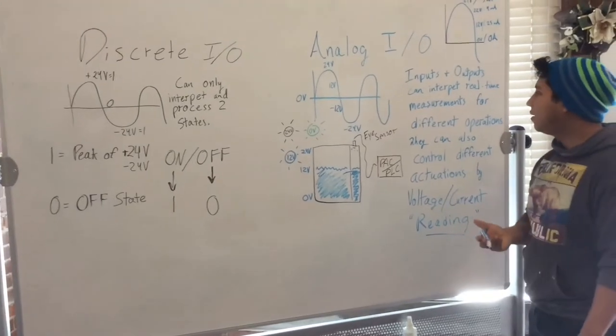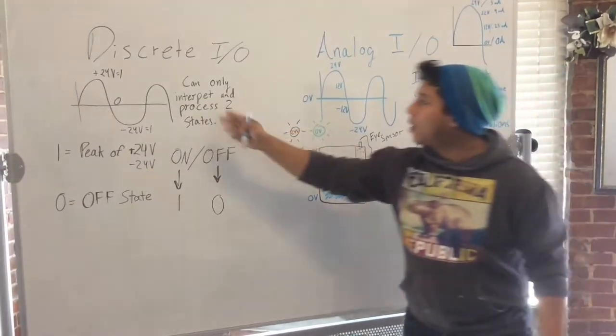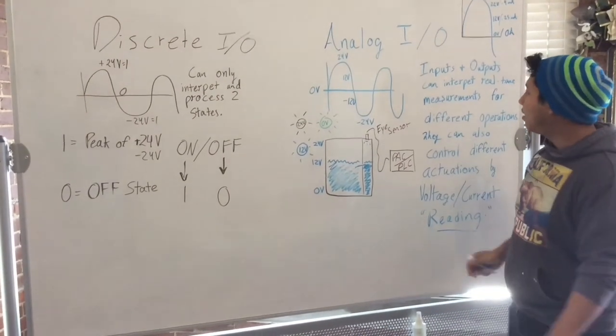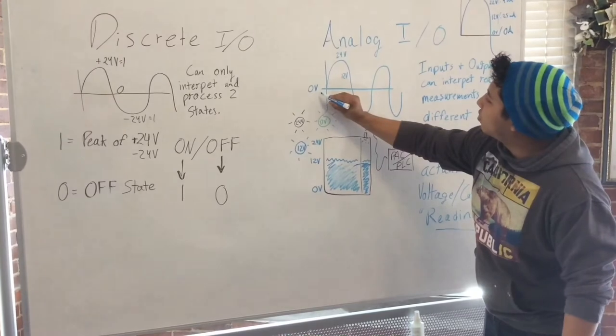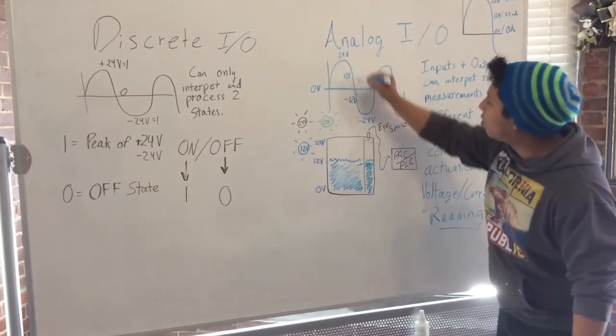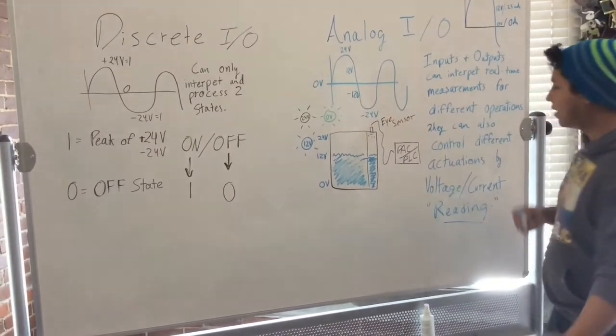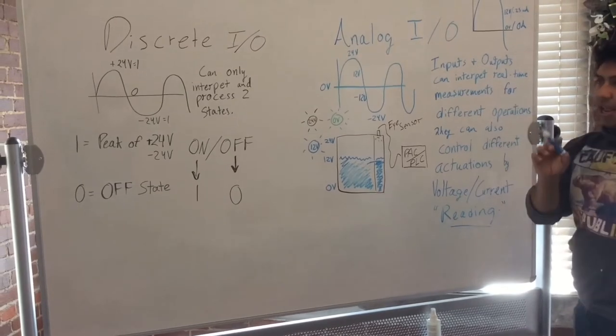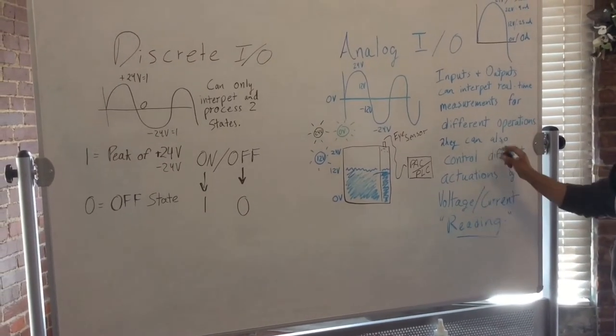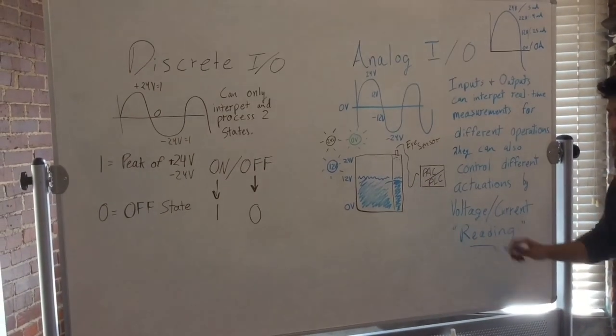Now the way that works is that it can go from a range. Think of it as a light switch. We went from on and off. Now we're going from a range of getting brighter. And it can be from zero volts to 24 volts. So it can go in between 12 volts. It can go below zero to negative 24 volts, etc. And you can use this for measurements for different operations. They can also control different actuations by either voltage or current reading.